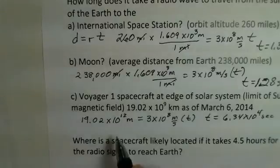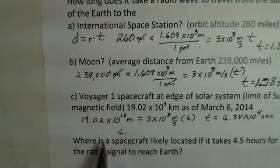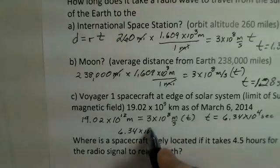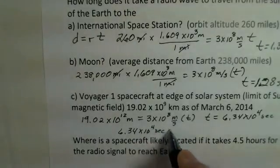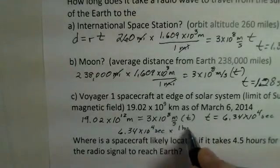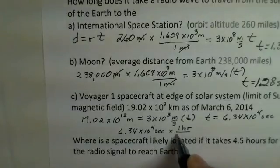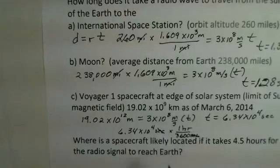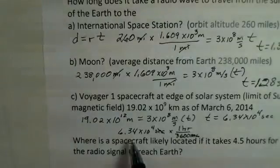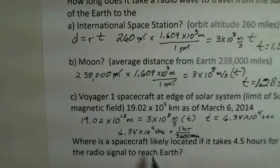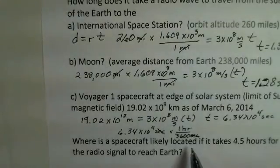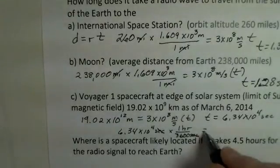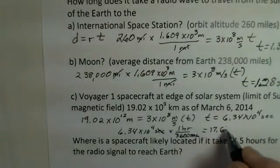Well, now the second unit is not quite so convenient. So let's change that into hours. And to do that, we apply a conversion factor. So 6.34 times 10 to the 4th seconds multiplied by 1 hour is 3600 seconds. So that will cancel off the seconds units. And when you take 6.34 times 10 to the 4th and divide by 3600, what you arrive at is 17.6 hours.